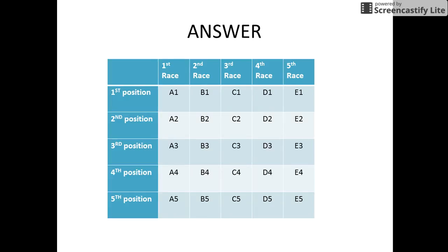Let us come to the solution. For simplicity, we name all the 25 horses starting from A1 to A5, B1 to B5, C1 to C5, D1 to D5 and E1 to E5.